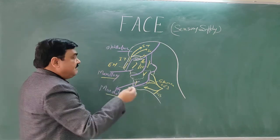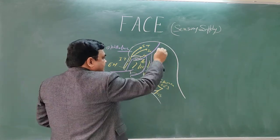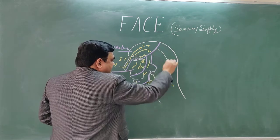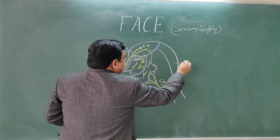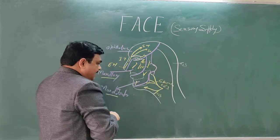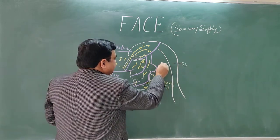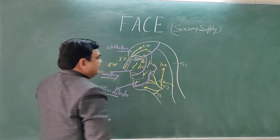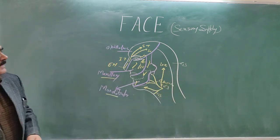If you see the posterior part, beyond the face, this is supplied by dorsal rami of C2 and C3, and this part is supplied by lesser occipital nerve. This is all about the sensory supply.